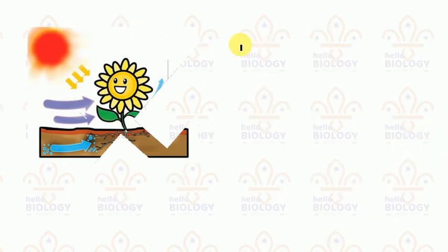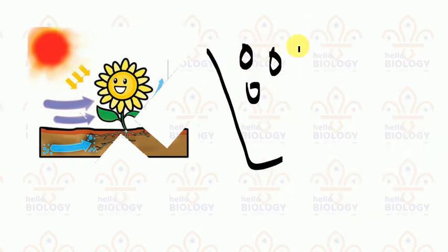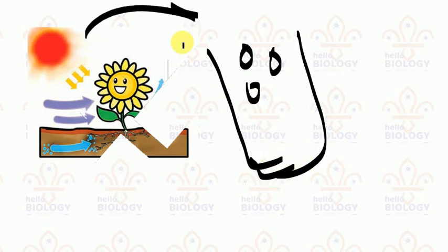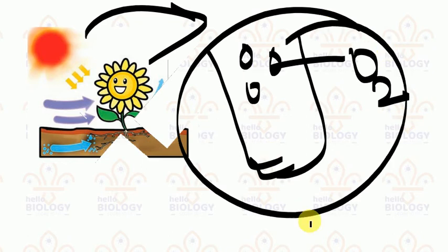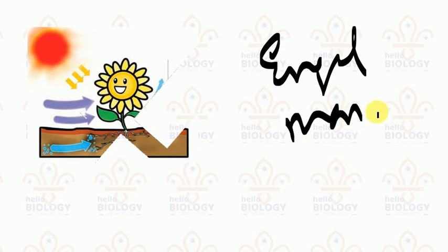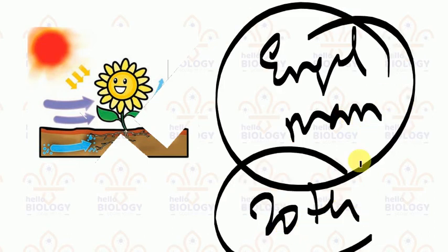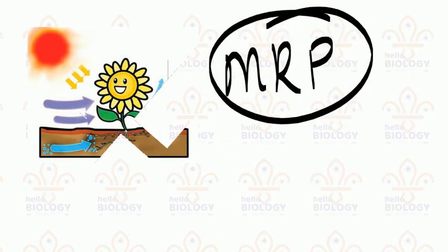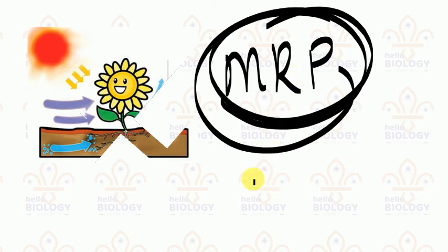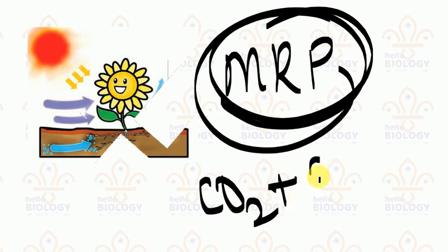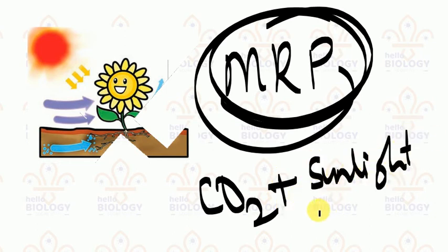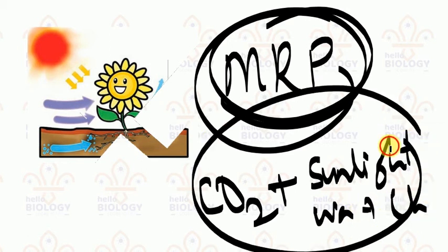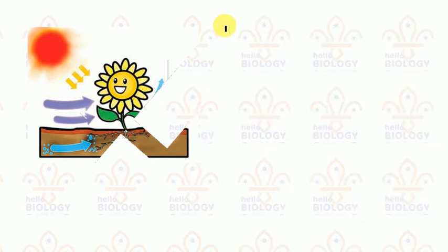Ingenhousz confirmed that bubbles formed in an aquatic plant kept in a beaker in the presence of sunlight consist of oxygen. Another scientist, Engelmann, in the 20th century, noticed that the maximum rate of photosynthesis occurs where good carbon dioxide is present, where good sunlight is present, where good water is present, and where good chlorophyll is present.